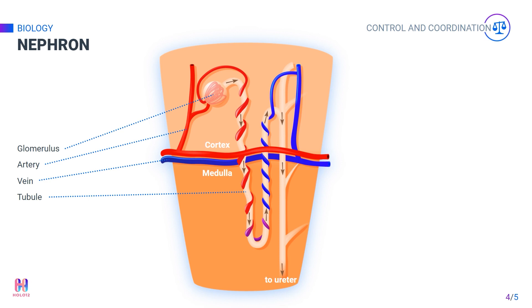The extra water from the blood is also moved into the tubules, resulting in the formation of urine. Running alongside the tubule is a blood vessel where water and useful minerals and nutrients such as glucose are reabsorbed. Anything left in the tubule becomes urine.